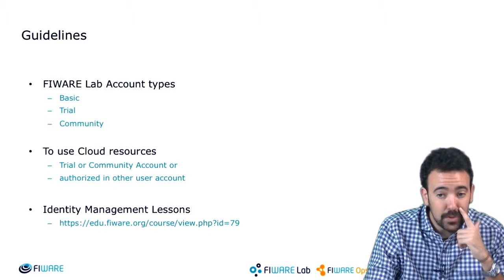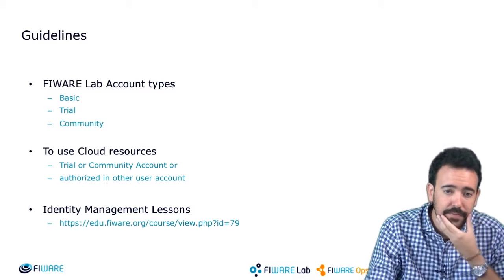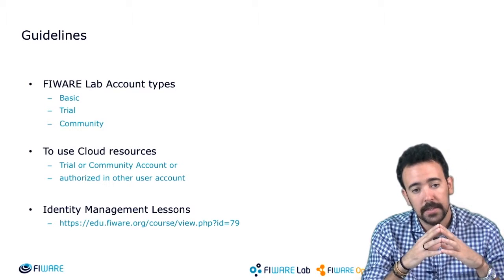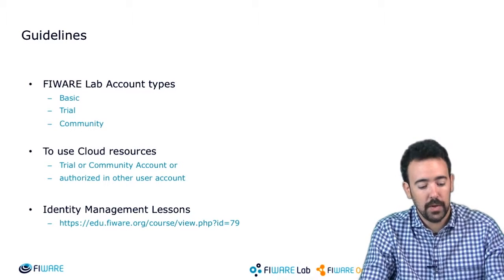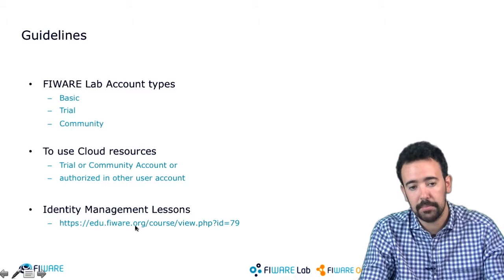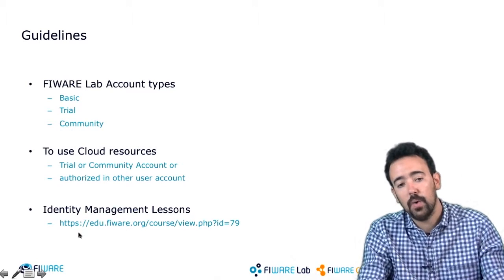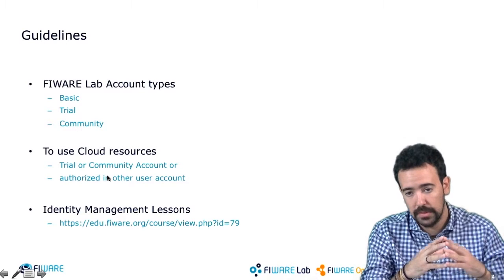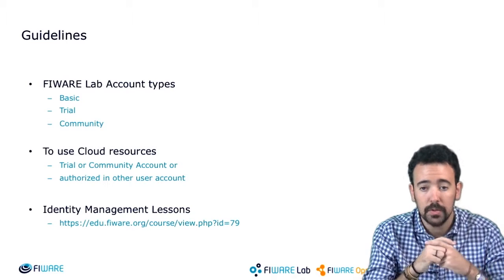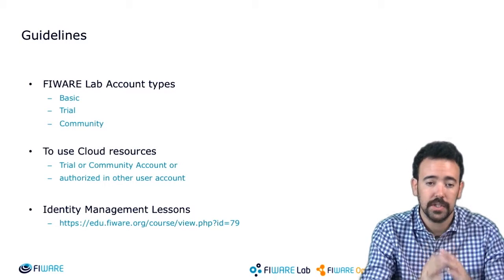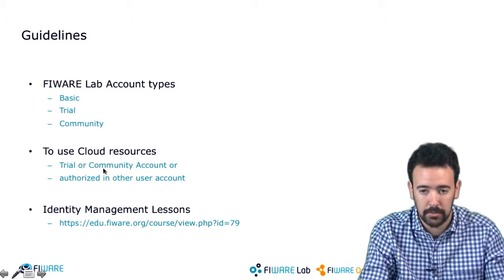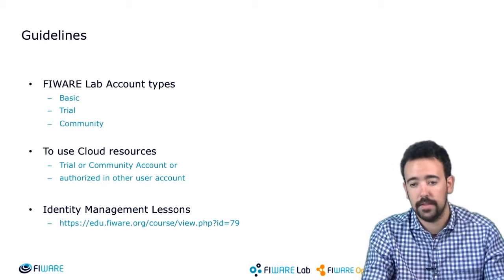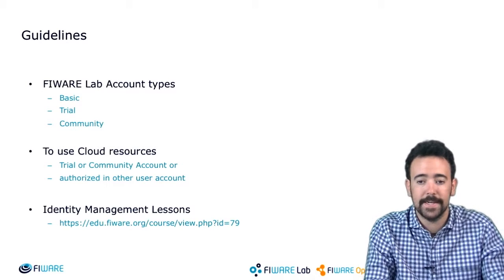An important thing you need to know here is the different FIWARE lab account types. I'm not going to go into details in this course about that, because we have a specific course in the security chapter regarding identity management and how account types work, and how to upgrade your account to a community account. But it's important to know that in order to use cloud resources, you need to have a trial or a community account. If not, you can ask another trial or community user to allow you to access the resources using their organization.